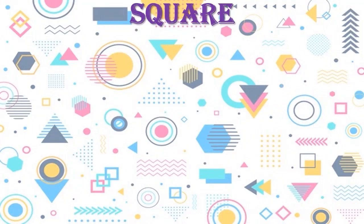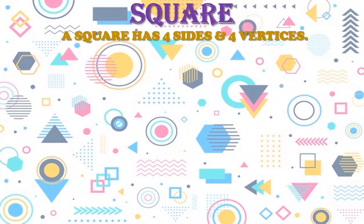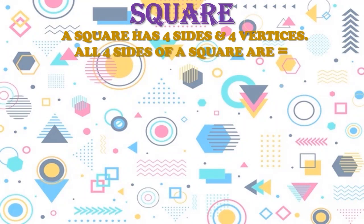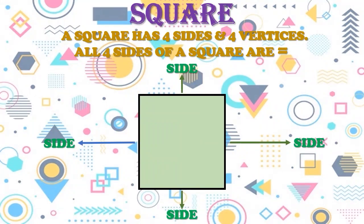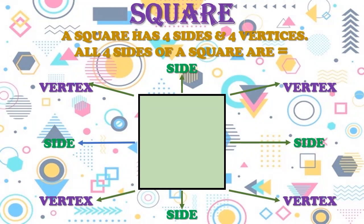Another plane shape is square. A square has 4 sides and 4 vertices. All 4 sides of a square are equal. This is a square — it has 4 sides, 4 vertices, and all 4 sides are equal.